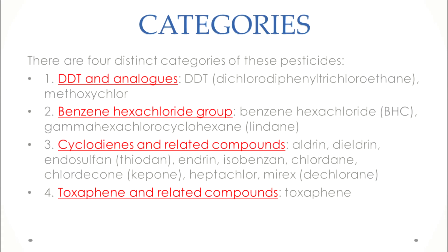The second category is the benzene hexachloride group, which includes benzene hexachloride and gamma hexachlorocyclohexane, also known as lindane. It's very important to remember all these names, as questions from this topic in the UGC NET exam come specifically from these different examples of organochlorine pesticides. These names are very important, so learn them by heart.